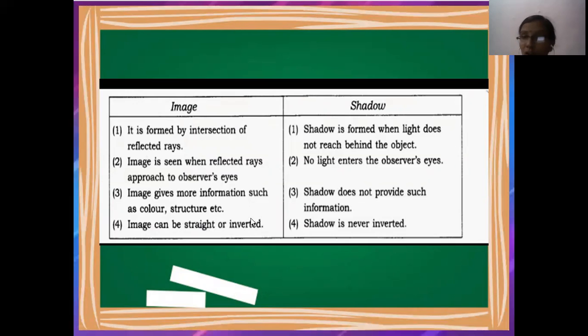Image can be straight or inverted. Shadow is never inverted. The image also shows the lateral inversion. Means the left side thing is visible as right and the right one is visible as left. But the shadow is not showing lateral inversion.